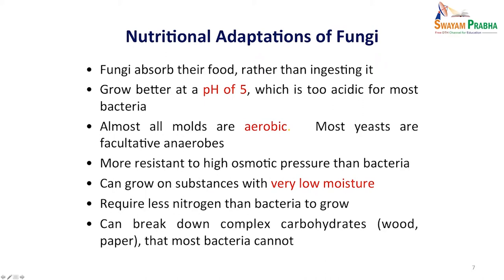Fungi cannot make food of their own, so they need to absorb food rather than ingesting it. They grow better at an acidic pH compared to bacteria. Mostly they are aerobic, but they can be facultative anaerobes as well. They are more resistant to high osmotic pressure than bacteria, can grow on substances with very low moisture, require less nitrogen than bacteria to grow, and can build on almost anything in nature — so they are good saprophytes.